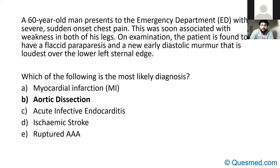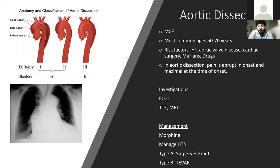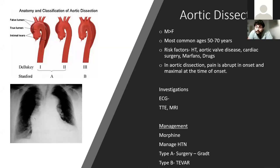Aortic dissection is life-threatening — at least 20% will die before reaching hospital. It's more common in males, and major risk factors are hypertension, smoking, and cardiovascular disease. Patients with connective tissue disorders — Marfan syndrome, Ehlers-Danlos syndrome, pseudoxanthoma elasticum — are particularly at risk. We classify aortic dissections according to whether they affect the ascending or descending aorta.